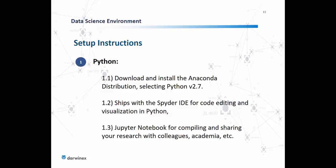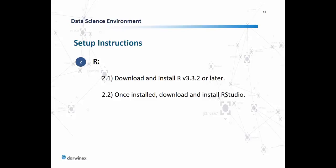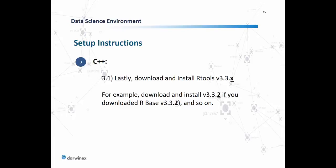Jupyter Notebook also comes free and ships with Anaconda. So if you wish to compile your research and share with colleagues, academia, or us at DarwinX Labs, it's a good medium to compile code in real time and add descriptions — a convenient way to share your research. In terms of R, download and install the base installation first, version 3.3.2, and once installed, download RStudio. For Rtools, if you install base R version 3.3.2, find, download, and install the corresponding Rtools version 3.3.2.